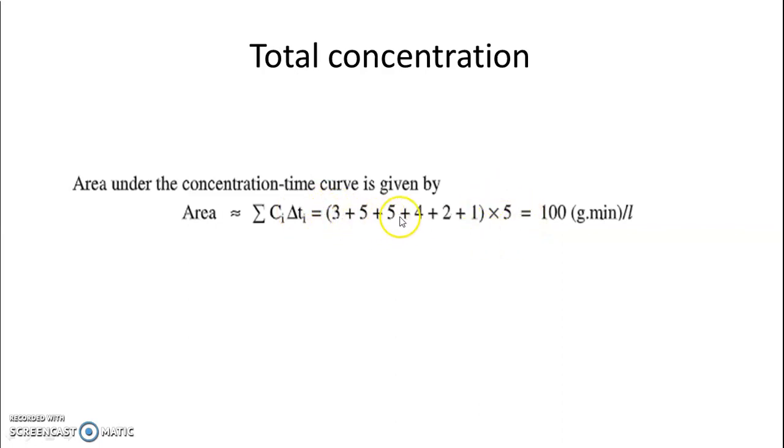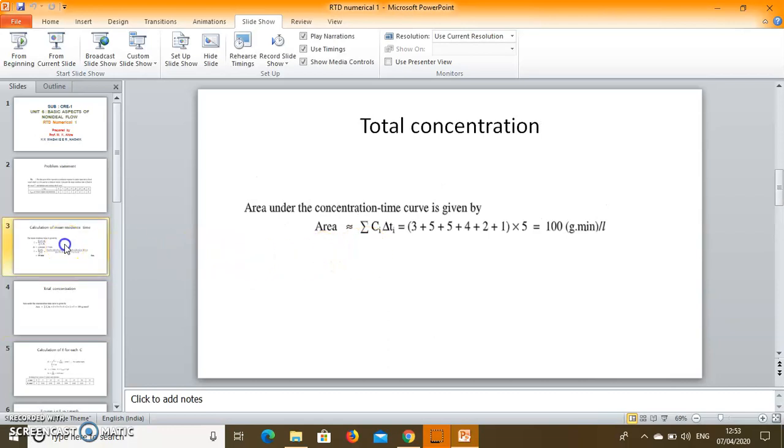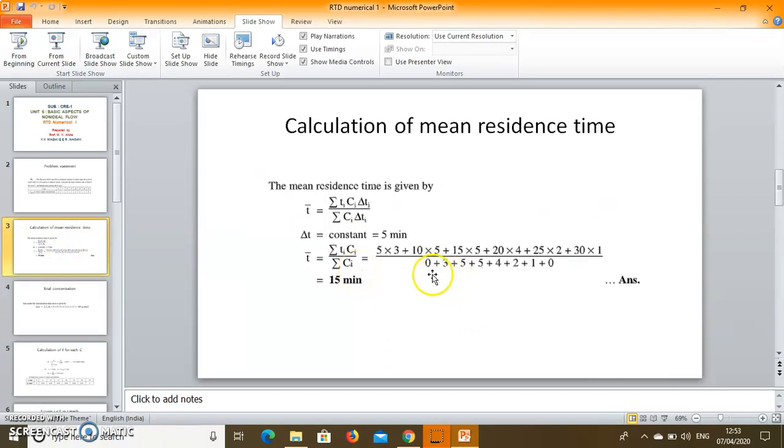So 3 plus 5 plus 5 plus 4 plus 2 plus 1 times 5, that is 100. This value we can use. So it is used here.